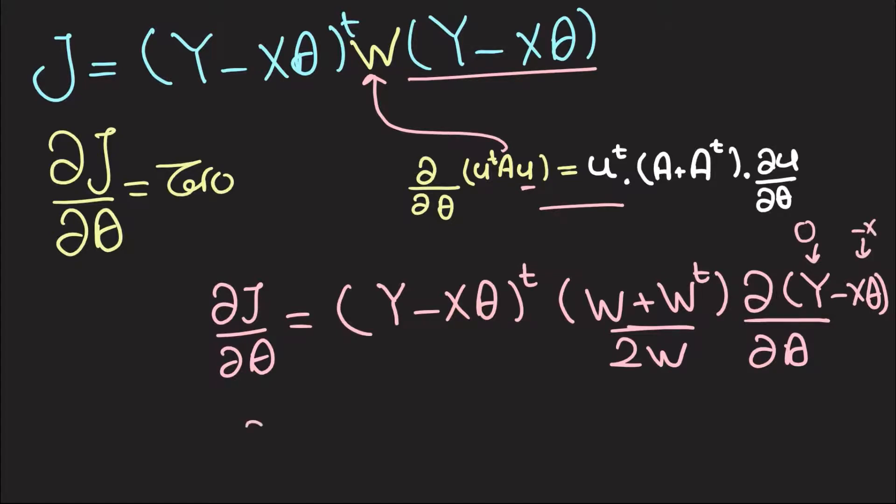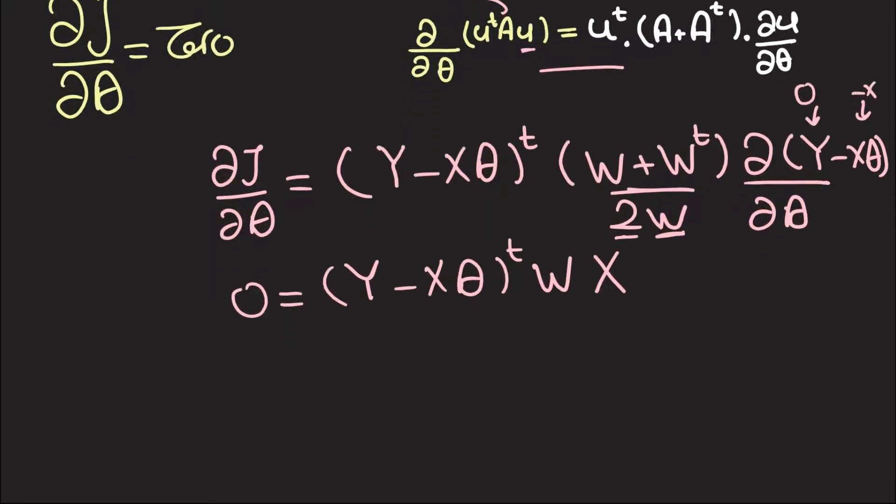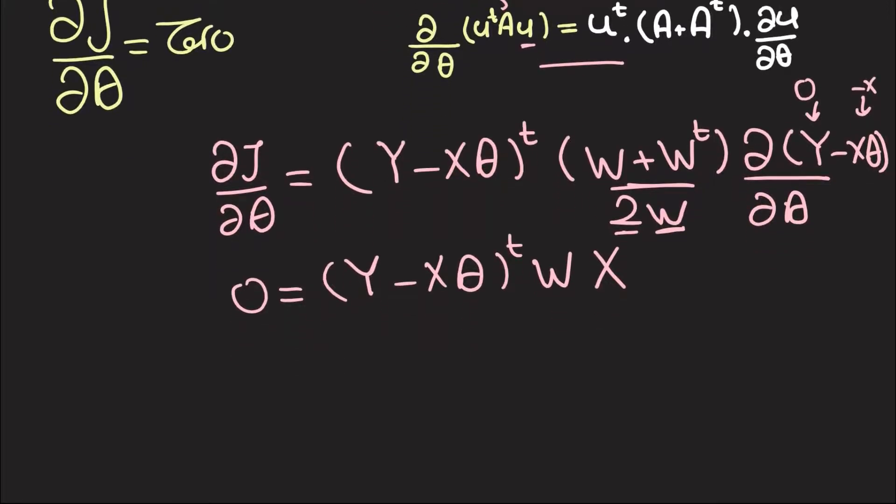So, what we have here is 0 is equal to y minus x theta all transpose multiplied by 2w. I'm just going to get rid of this 2 for now, so let's just write down w. And this gave us negative x, let's forget about the negative and write down x. And now, let's transpose the whole equation.